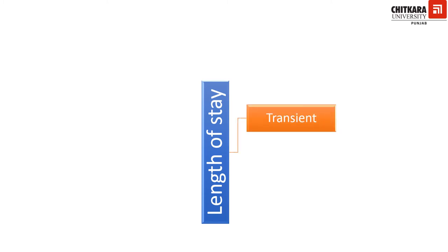Talking about the length of stay, based on the length of stay, the hotels can be classified into transient hotels. Transient hotels are stopover hotels — they are mostly occupied by travelers who are en route a long journey. They consider a stopover just for relaxation and rejuvenation, and continue their journey after their stay. So the stay in transient hotels is very short, maybe a day or a couple of days.